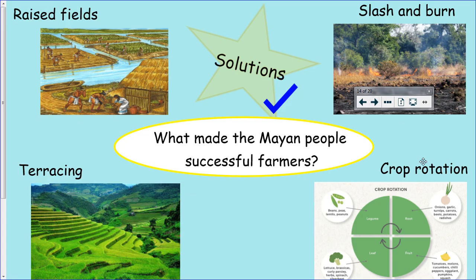So those were the four solutions the Maya came up with to become successful farmers in the difficult landscapes of Mesoamerica: raised fields in the marshland when it was too wet, slash and burn in the rainforest where there was no room, terracing in the mountainous areas where it wasn't flat enough, and crop rotation to ensure the soil stayed fertile and crops could grow successfully.